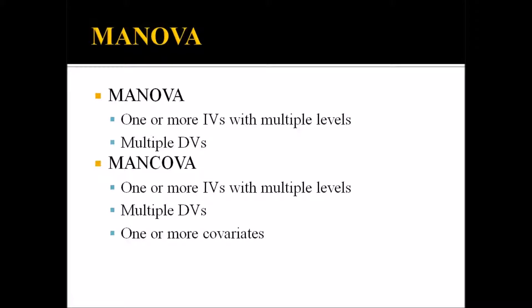Moving on to MANOVA: a MANOVA is the same as an ANOVA except it has multiple dependent variables. After a MANOVA is conducted, if there is a statistically significant result, you would follow up with several ANOVAs. A MANCOVA is the same as a MANOVA, except you have one or more covariates.